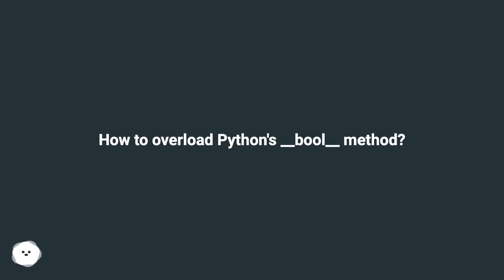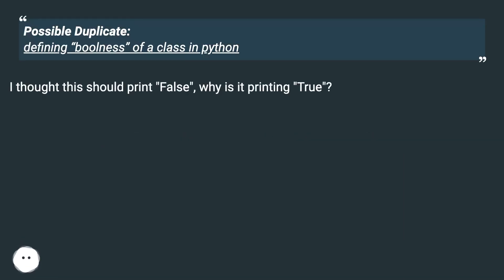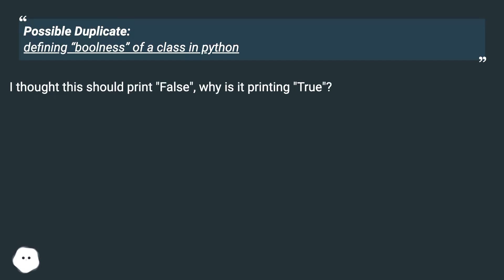How to overload Python's __bool__ method? Possible duplicate: defining boolness of a class in Python. I thought this should print false — why is it printing true?